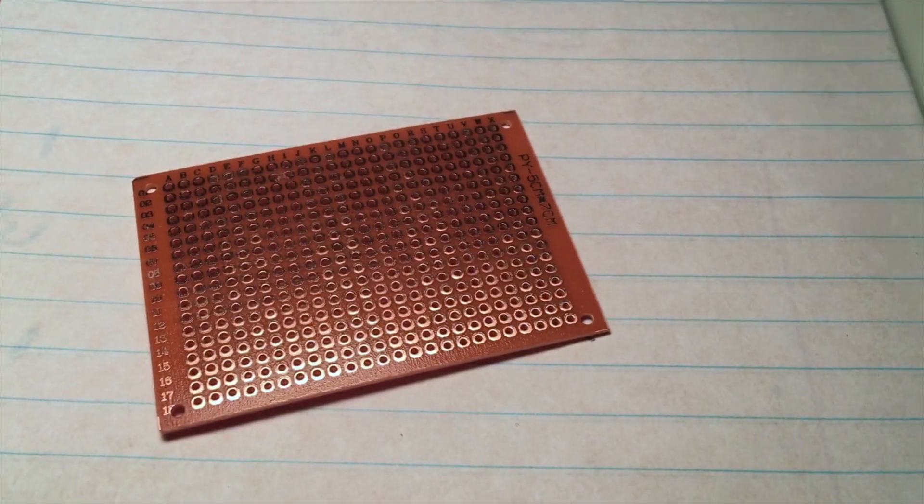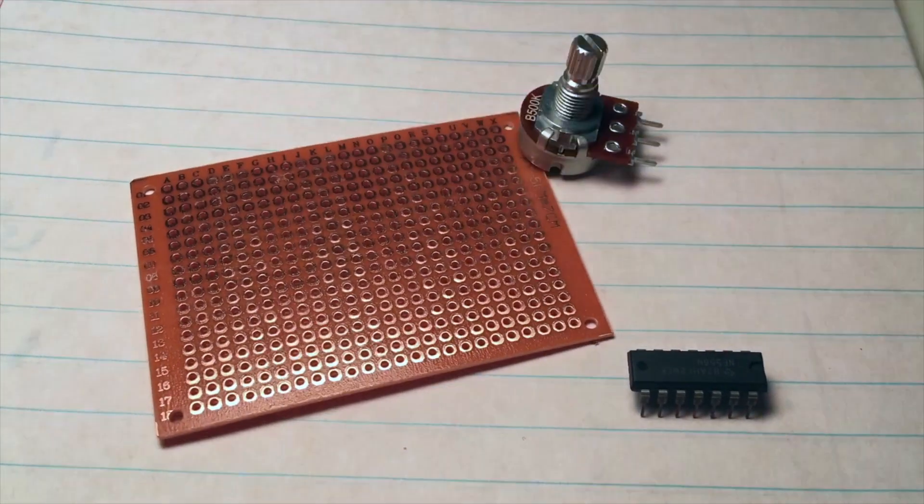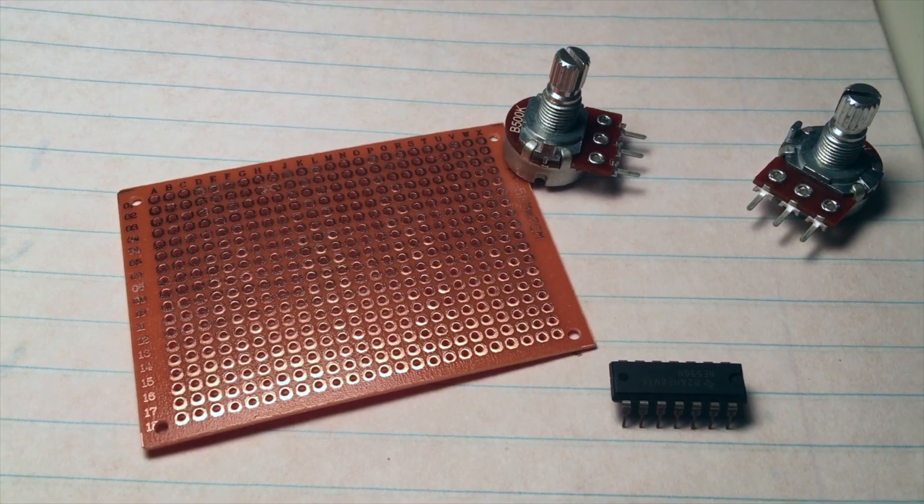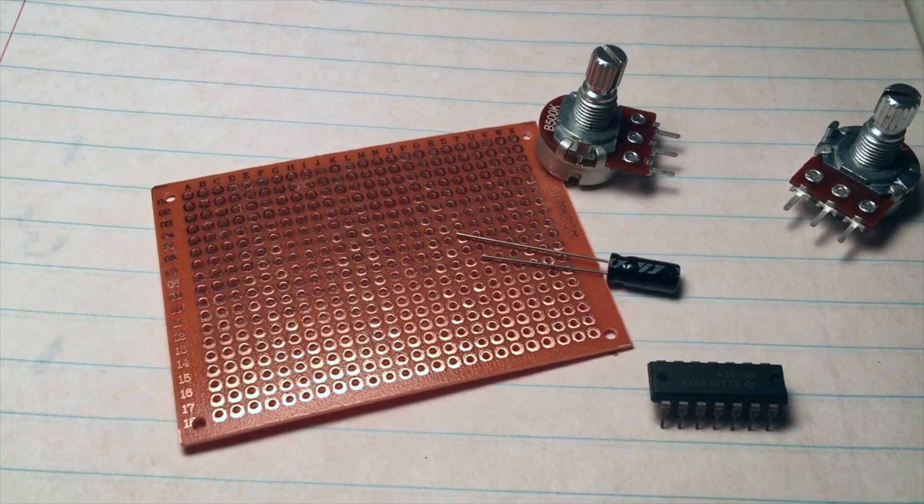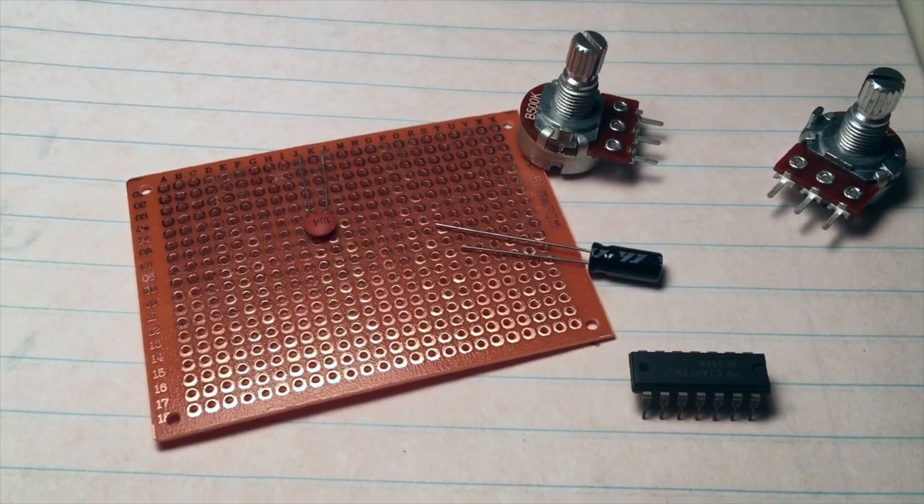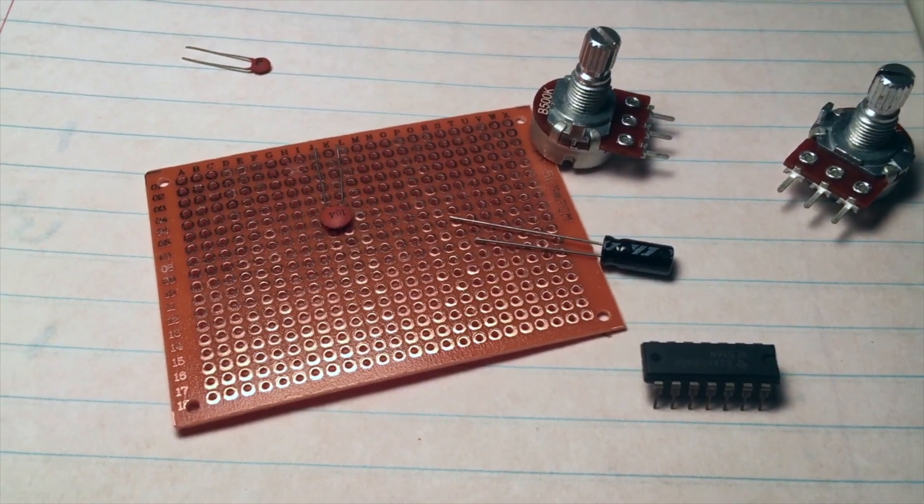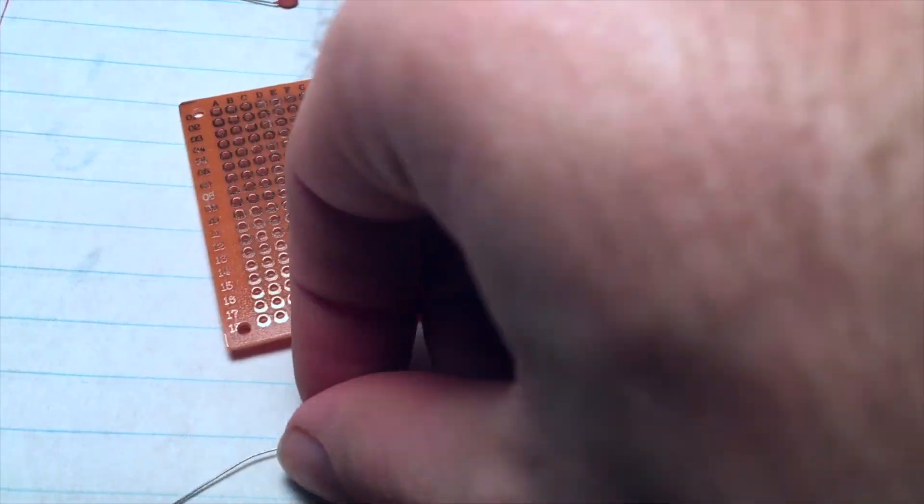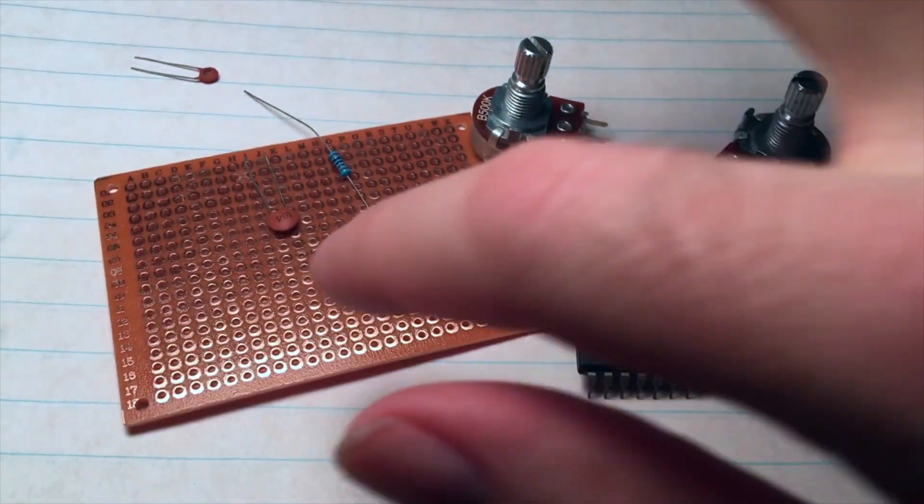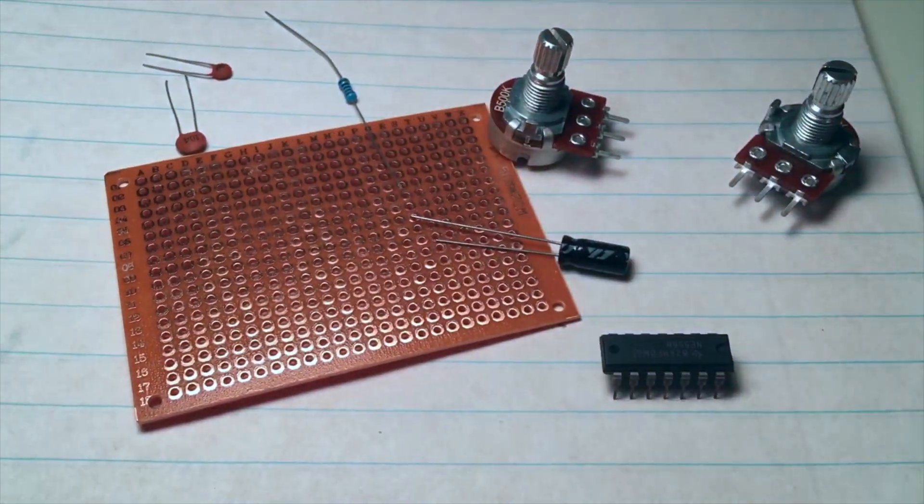Here's what you'll need. Perf board. That's a 5-5-6 timer. You'll need two potentiometers, 10 microfarad electrolytic cap, 0.1 and 0.01 microfarad ceramic disc cap, a 1k resistor, and you'll also need a 9-volt battery snap and a jack for your output.